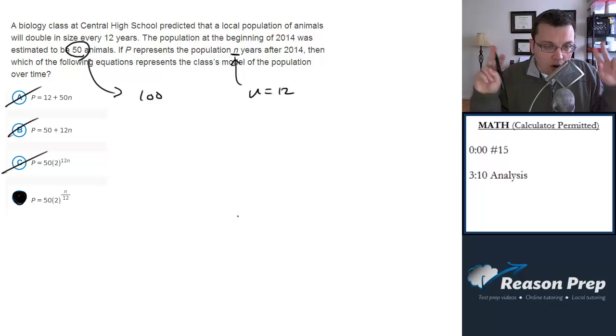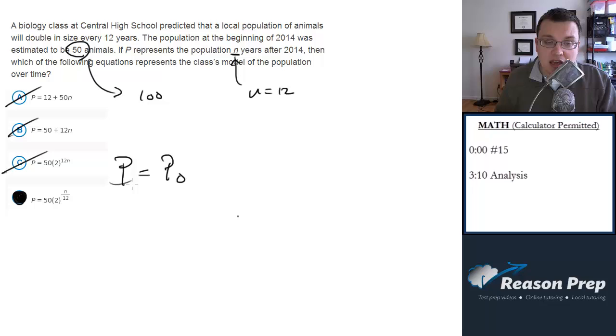You also could do the more official way to do the question, which is set up your exponential. So we're going to do our exponential equation. Generally the population or the quantity of whatever it is you're looking at is equal to the initial population times the growth, which we'll talk about in a second, to the time over, we'll call this B.